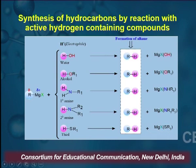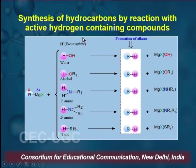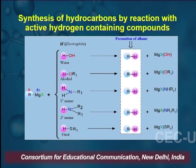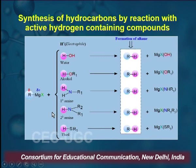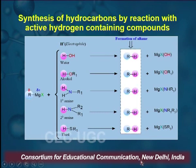Here, H⁺ is the electrophile, where all these species — water, alcohol, primary and secondary amines, thiols, and carboxylic acids — all have active hydrogen where hydrogen is replaced very easily in the form of an electrophile. All these reactions will result in the formation of the same alkane and corresponding substituted products, depending on which Grignard Reagent is used.